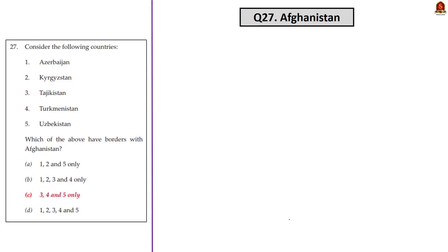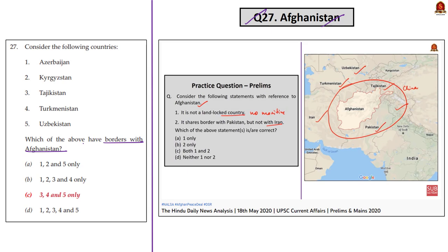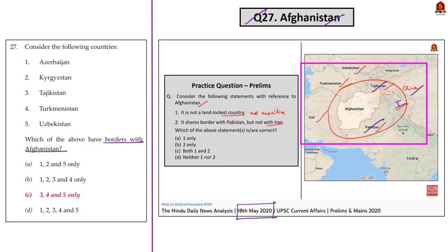Question 27 is about Afghanistan and its bordering countries. We have seen its borders many times in our discussions — for example, in the practice question discussed on 18th May 2020. The bordering countries of Afghanistan include Pakistan, India, China, Tajikistan, Uzbekistan, Turkmenistan, and Iran. With this knowledge, you can arrive at the correct answer, which is option C.